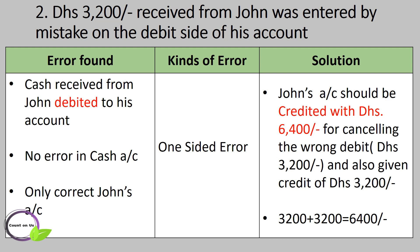Second one: 3200 dirhams received from John was entered by mistake on the debit side of his account. We may assume that the cash account has been written correctly, so the error is only in John's account. He should have been credited and not debited. Here, you have to note that not only the wrong debit should be cancelled, but also you have to enter the credit amount. This is done by entering the amount 6400 dirhams on the credit side of John's account.